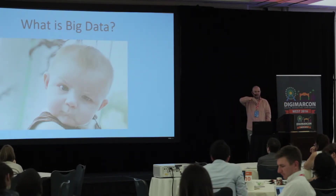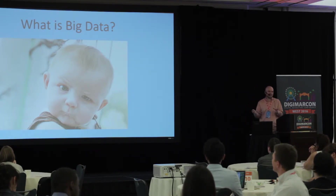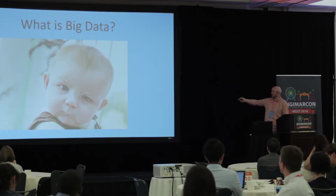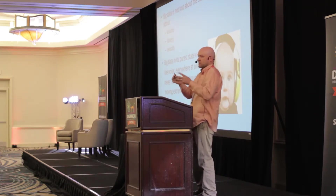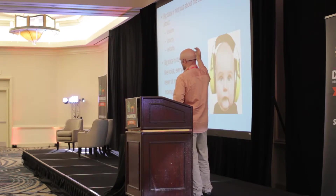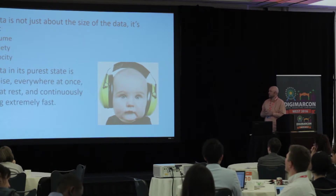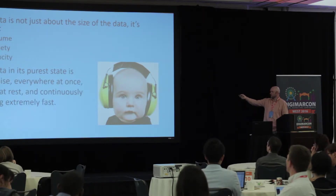So what is big data? People always love when a definition includes another word you don't fully understand. Big data is not just about the size of data. All data scientists say they work with big data to draw conclusions, make predictions, and formulate actions. It's about the volume of data, but also the variety — pulling together disparate data sources in different formats. That's where the programming component comes in. It's also about the velocity of data, how quickly it's moving. One definition I really like: big data in its purest state is like noise — everywhere at once, never at rest, and continuously moving very fast.